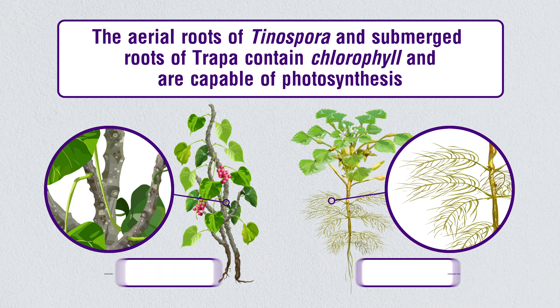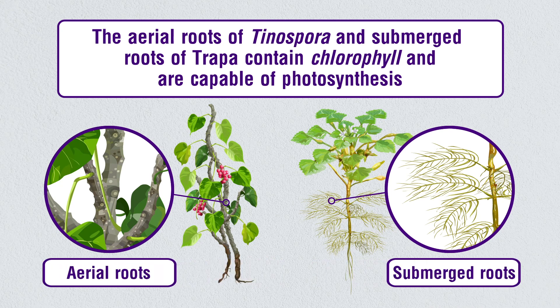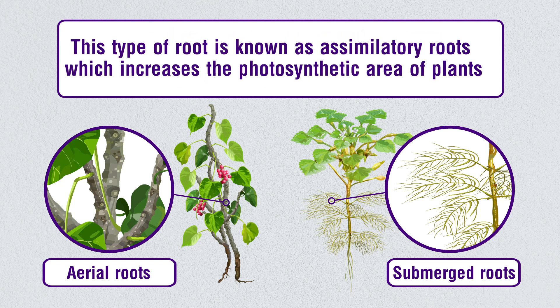The aerial roots of Tinospora and submerged roots of Trapa contain chlorophyll and are capable of photosynthesis. This type of root is known as assimilatory roots, which increase the photosynthetic area of plants.